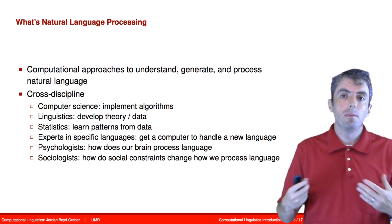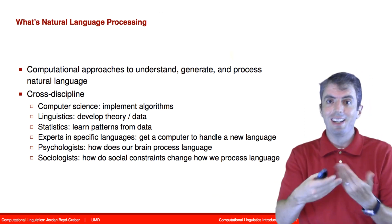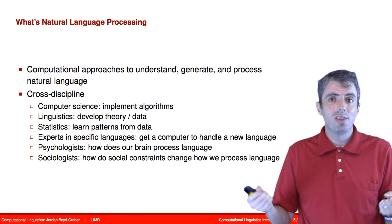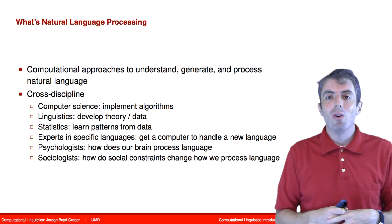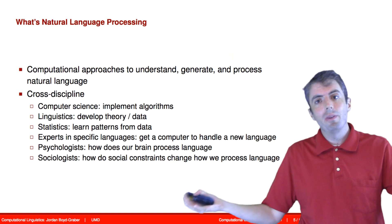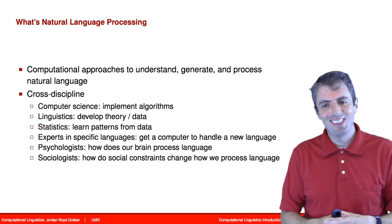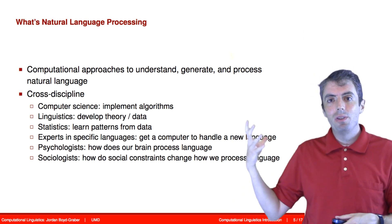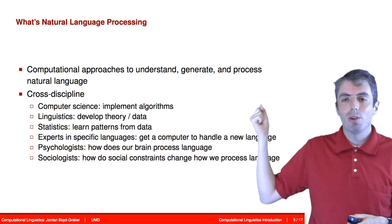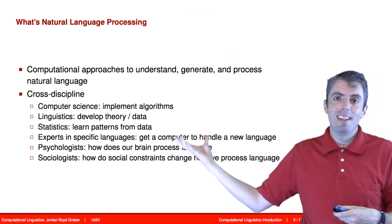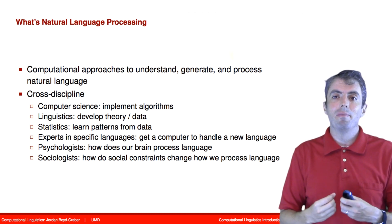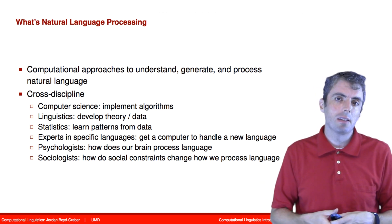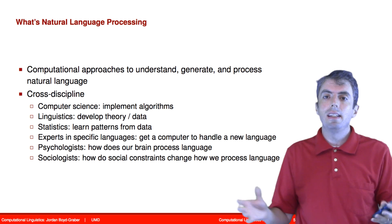While much of this course will be talking about English data because English is the language that we'll use for communication in this class, natural language processing and computational linguistics is not just about English processing or English linguistics. It's about every language in the world, or languages even beyond our solar system. And for that, you need to have expertise in specific languages. How do you very quickly build up a system for a language that you may not speak and that you have very little data for? How can you create a system that is effective on a new language? For that, you need language-specific expertise or techniques that transcend any specific language.